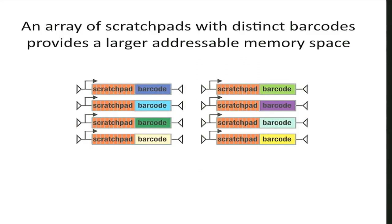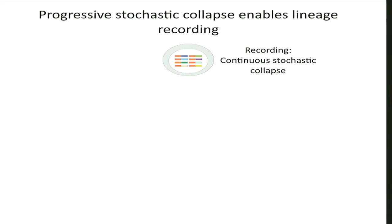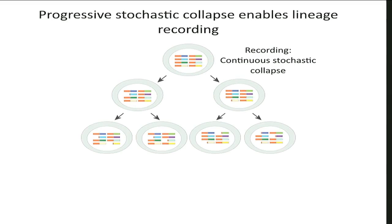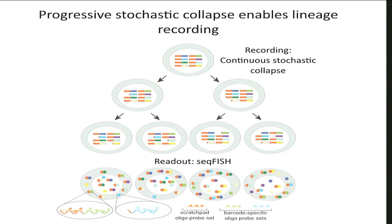We can make a whole array of these things, each of which has the same scratch pad sequence but a different unique barcode, giving us a larger addressable memory space. Now, if we want to use a bunch of these to record and reconstruct lineage, it's pretty straightforward. We start with a cell line that has many of these elements, then turn on the system and let some of these elements get progressively and stochastically and independently cut in different cell lines. At the end of a few generations, each cell will have a unique fingerprint of which bits are in which states, and from that we reconstruct the lineage.